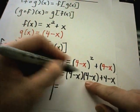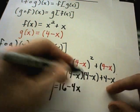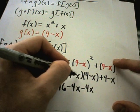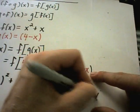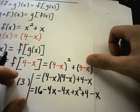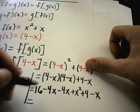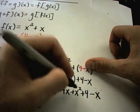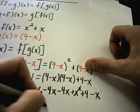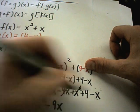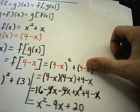If I foil this out, I'll get 4 times 4 which is 16, 4 times negative x which is negative 4x, negative x times 4 is negative 4x, negative x times negative x is positive x squared. I have my plus 4 and my minus x. Now it's combining like terms. I see x squared first, negative 4x and negative 4x is negative 8x, minus another x is negative 9x. Then 16 plus 4 is 20. That's the composition f of g of x.